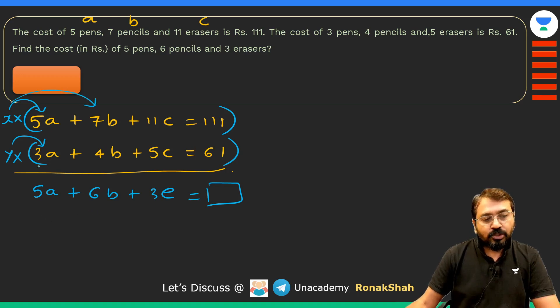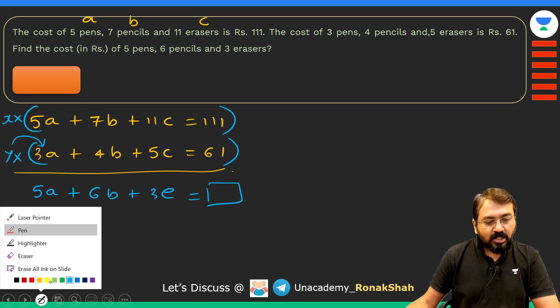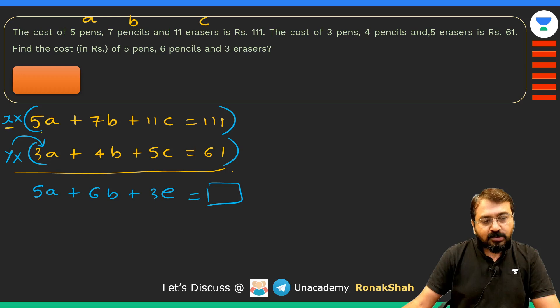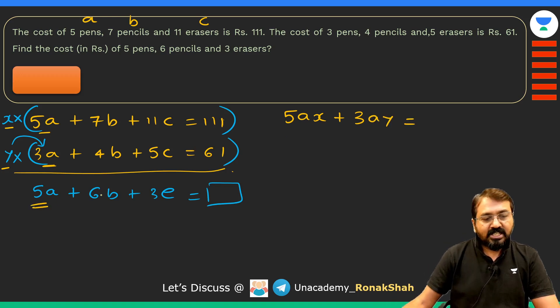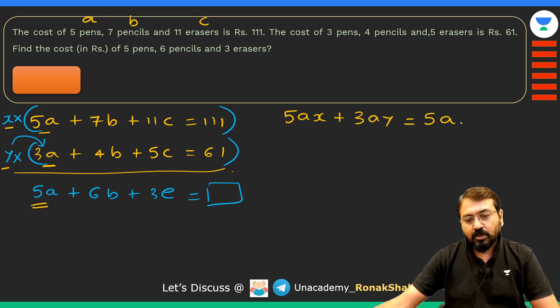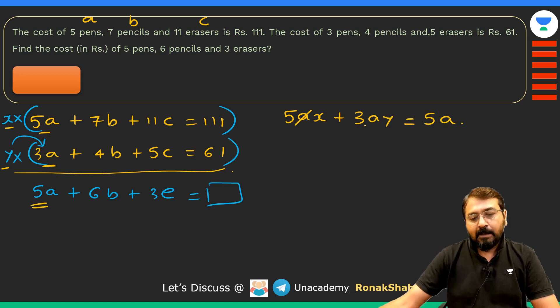We can write down the situation like this: x multiplied by 5a is 5ax, plus y multiplied with 3a is 3ay, and we should get result as 5a. Of course, the a part will get cancelled off and we will get one equation as 5x + 3y = 5.